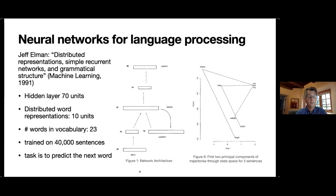Moving forward to neural networks, one of the first attempts to process linguistic structure in neural networks was by Jeff Elman in 1990. Elman tackled three fundamental problems: what is the nature of linguistic representations, how can complex structural relations such as constituents be represented, and how can the apparently open-ended nature of language be accommodated by a fixed-resource system. He built a simple network trained on 40,000 sentences from an artificial grammar over 23 words. Similar words had similar representations, similar sentences had similar trajectories, and the system could handle a level of recursion.